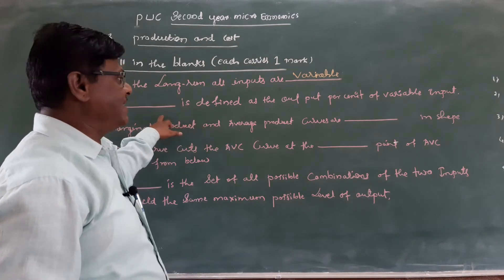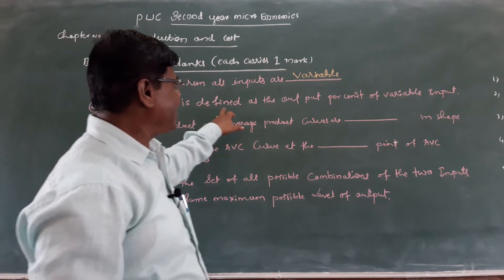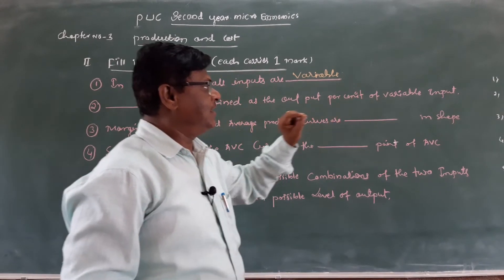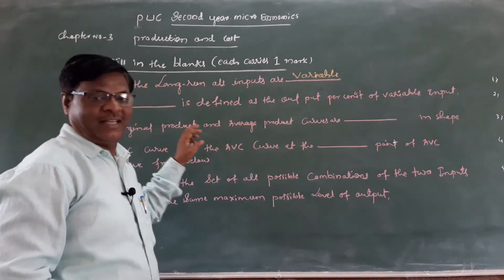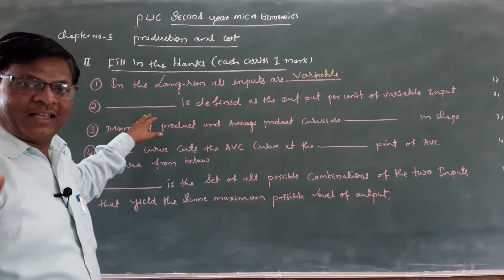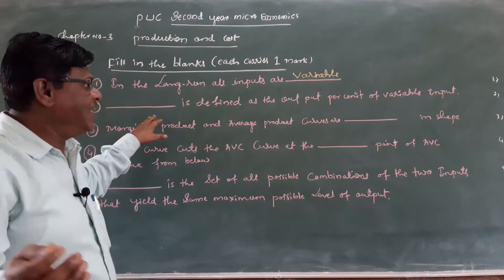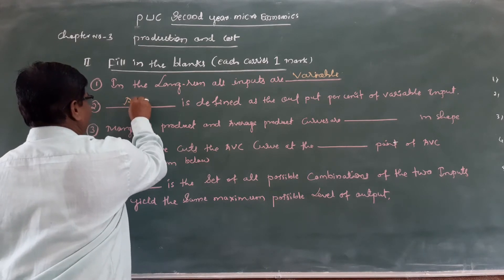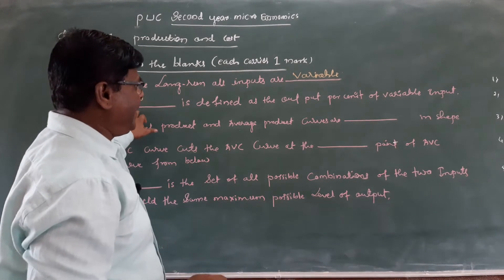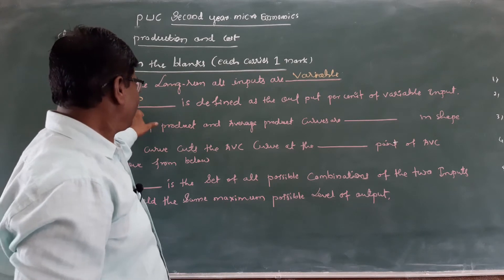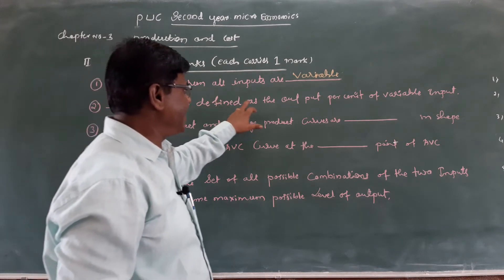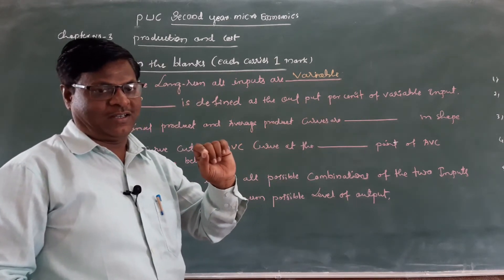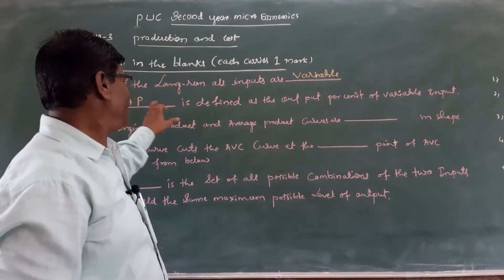Answer to question 2: Dash is defined as the output per unit of variable input. The answer is average product. AP — average product — is defined as the output per unit of variable input.